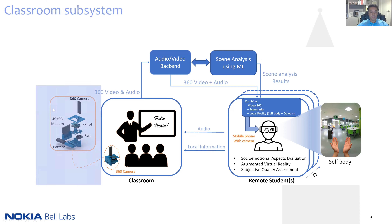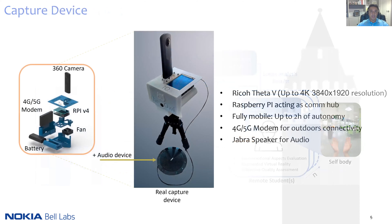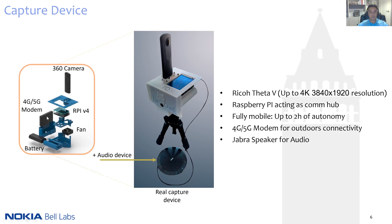The first subsystem is the capture device. As you can see in this figure, it is composed by a 360 camera — in this case we are using the Ricoh Theta V, which is able to capture up to 4K resolution. We use a Raspberry Pi which acts as a communication hub, supporting Wi-Fi, RJ45 Ethernet, and mobile connectivity using 4G and 5G modems. Finally, we use a Jabra speaker for audio capture in the classroom, and we use the same device to reproduce the audio of the remote students.